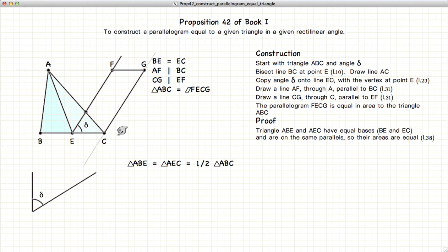First, let's look at our triangles ABE and AEC. Because E is the midpoint of BC, BE and EC are equal in length. So we have two triangles with the base equal to the base and sharing the same parallels, which means these two triangles are equal in area, which gives us that triangle AEC is equal to half of triangle ABC.